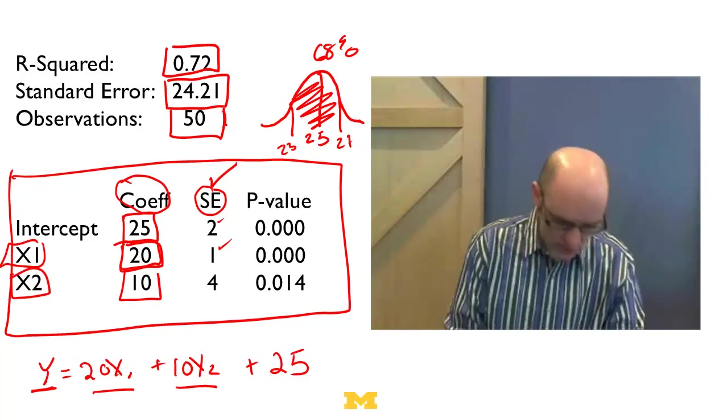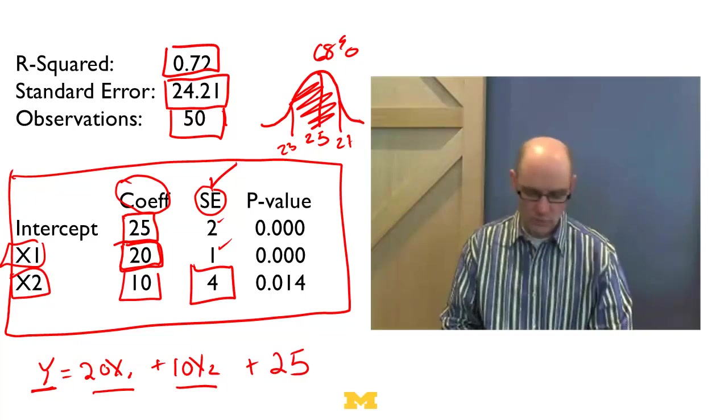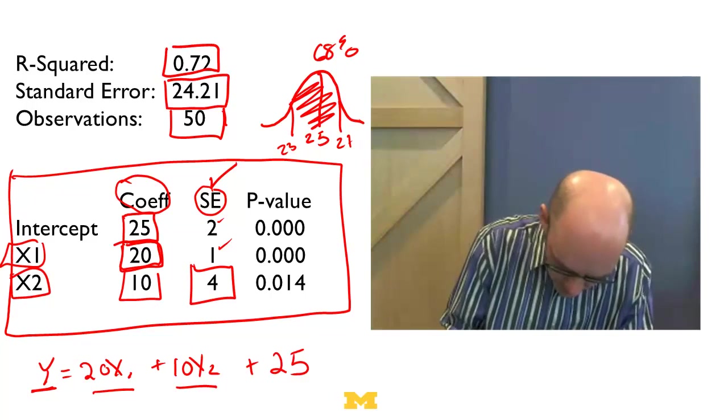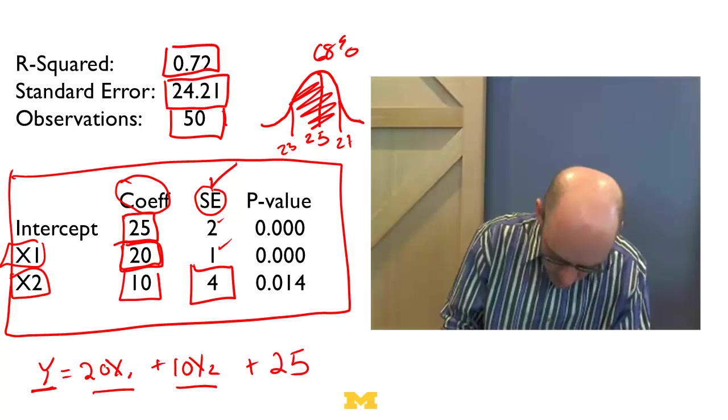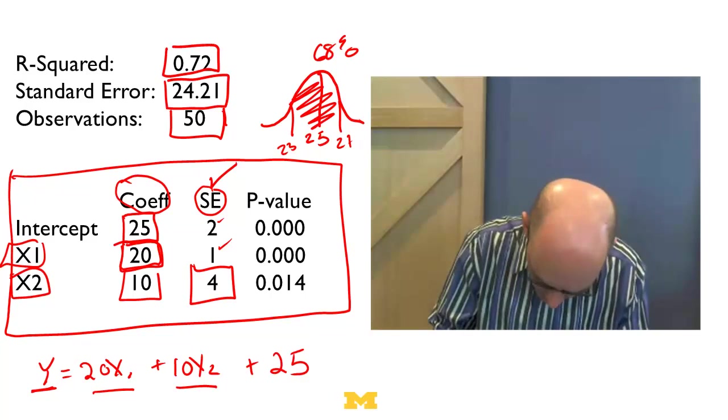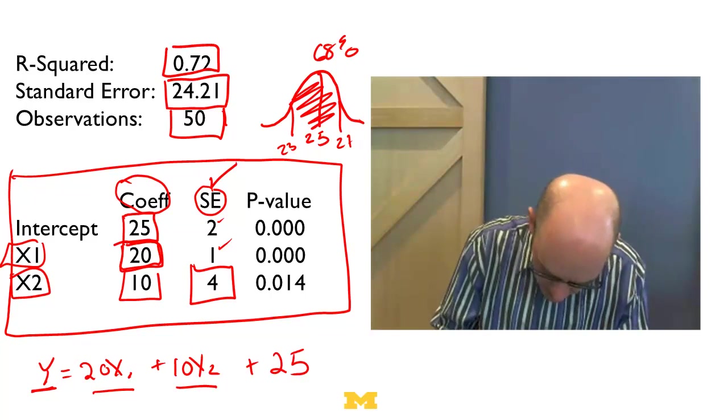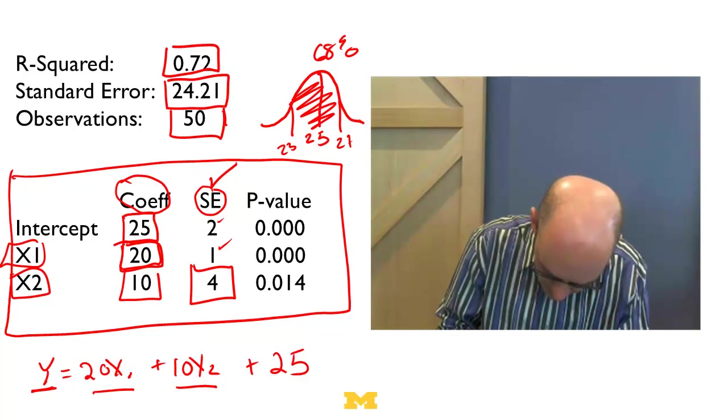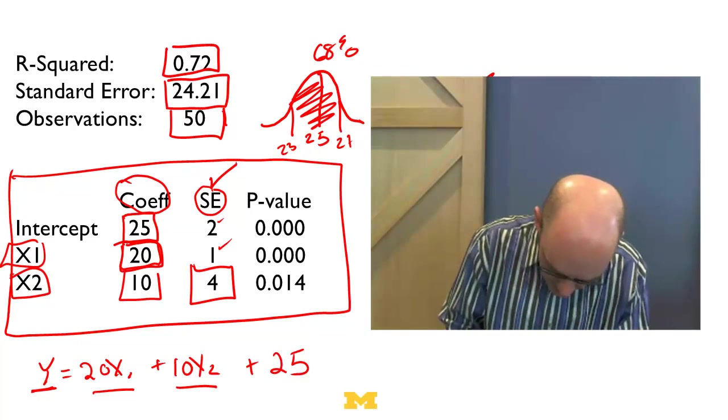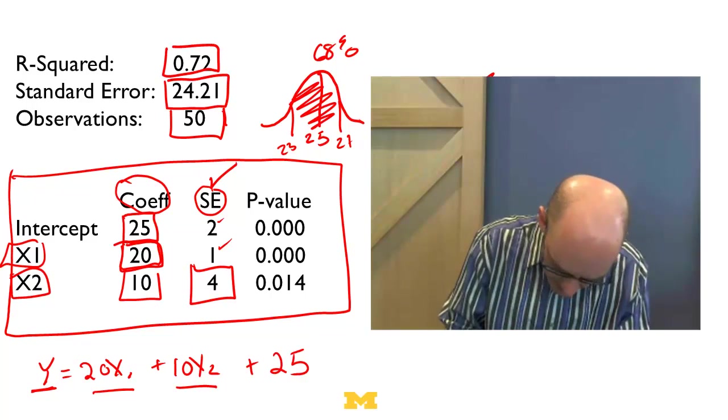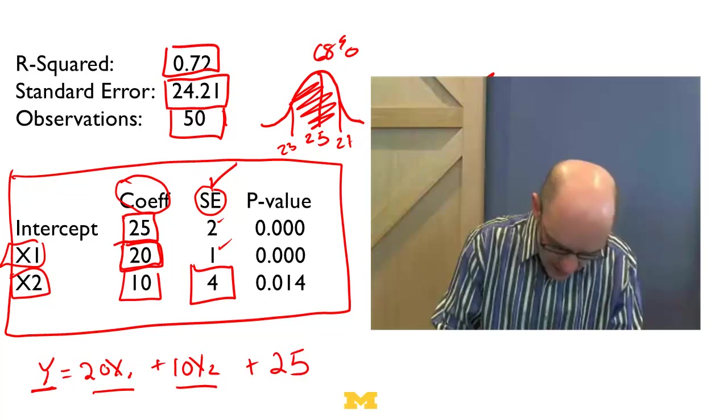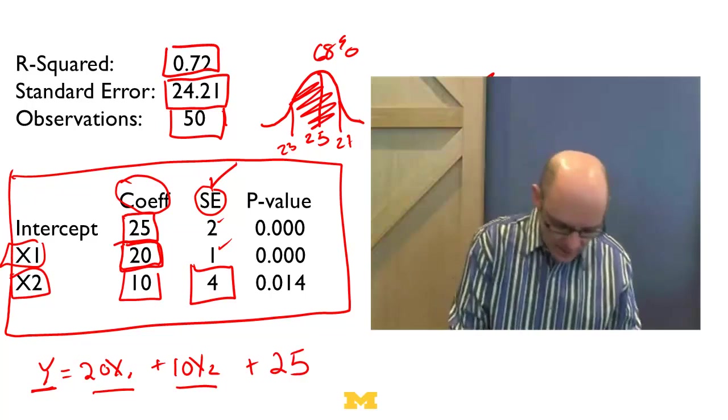But now let's look at this last one, x2. The coefficient was 10, and the standard error was 4. So if I draw my bell curve, what it's saying is, from the data, I'm estimating that coefficient of 10. But I've got a standard error of 4. So that means there's a 68% chance it lies between 6 and 14. And there's a 95% chance it lies between 2 and 18. And there's actually at least a 2% chance it is below 2. So there's some chance that this coefficient actually, instead of being 10, could be negative.